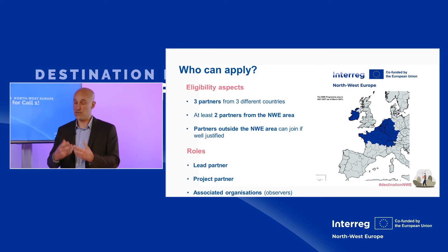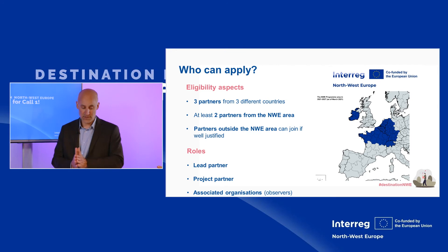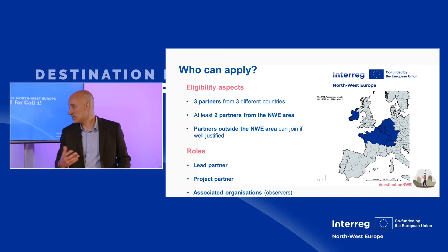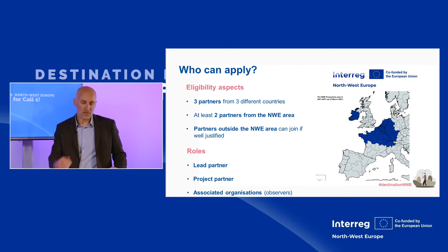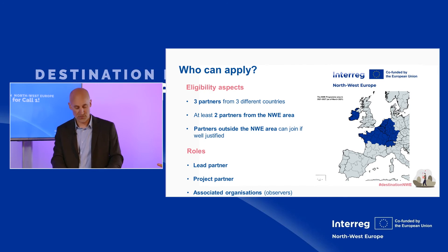Associate organizations — previously called associate partners — are entities that do not receive ERDF funding and do not need to financially contribute to the project. However, they may have an interest in the results or can be useful for disseminating information further. It is always valuable to identify organizations that can play this role, especially given the program's focus on dissemination and rollout.